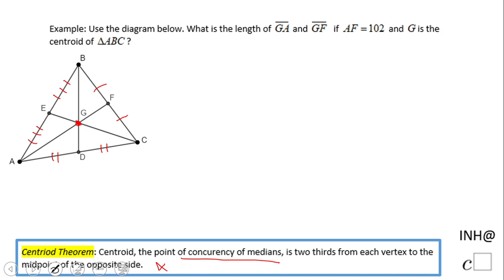What we know is that AF is 102. AG, the one that we need to find out, is two-thirds of AF. That's what it says here.